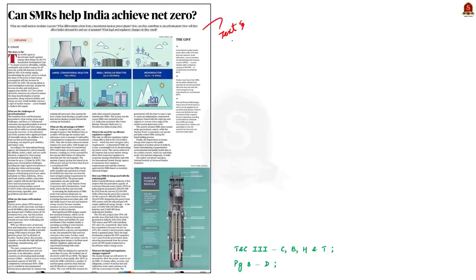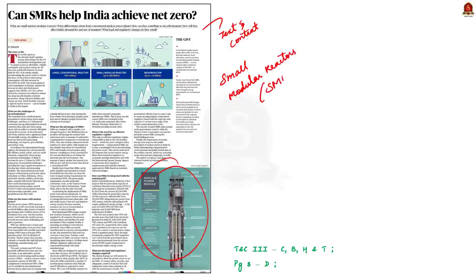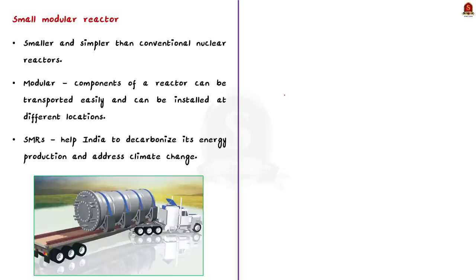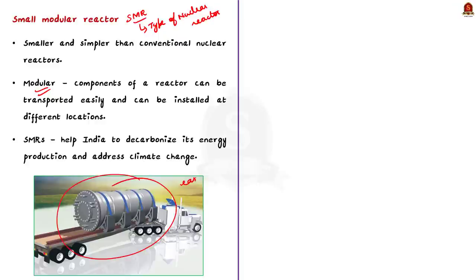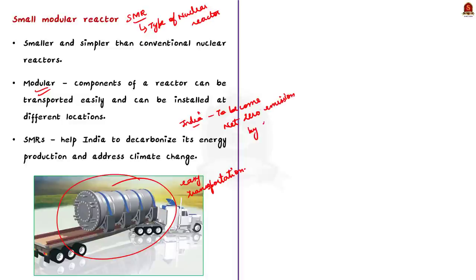The next article from the text and context page discusses various aspects of Small Modular Reactors (SMRs). A Small Modular Reactor is a type of nuclear reactor that is smaller and simpler than conventional nuclear reactors. The word 'modular' means the components can be transported and installed at different locations. These advantages make SMRs a good option for countries like India, which has set a goal to become a net-zero emission country by 2070, and SMRs can help decarbonize India's energy production.